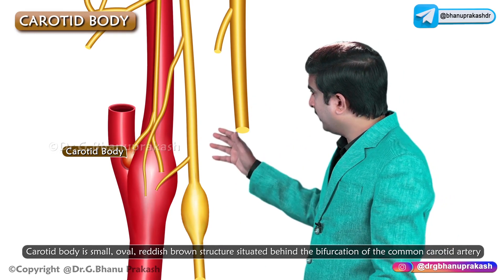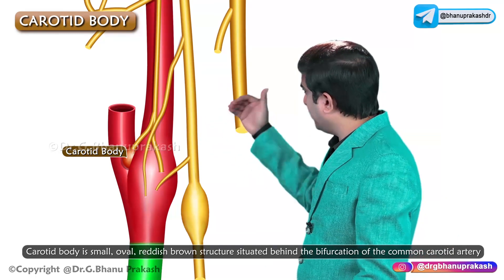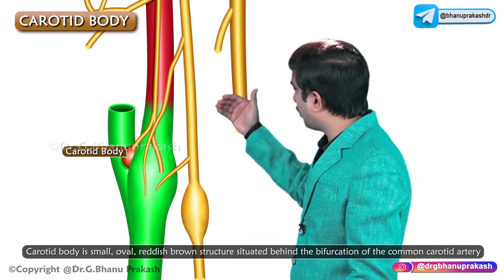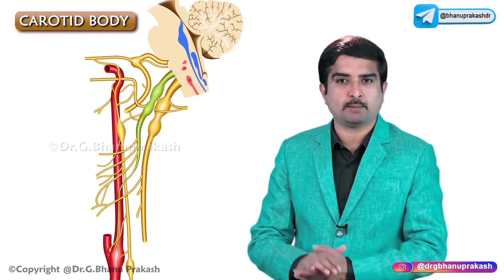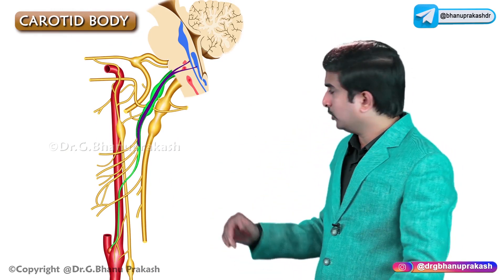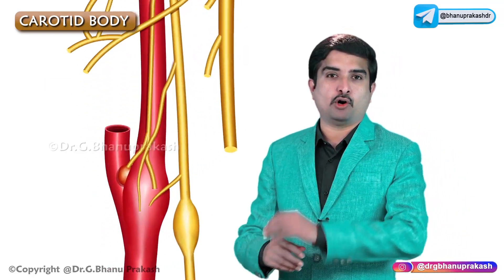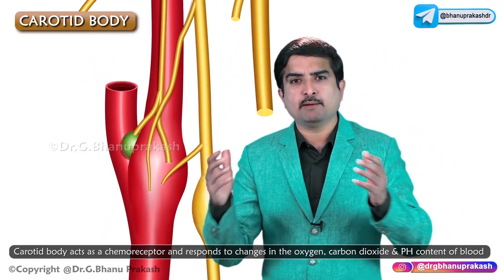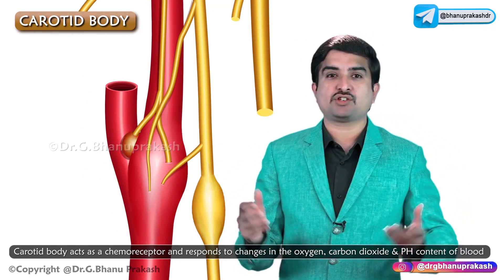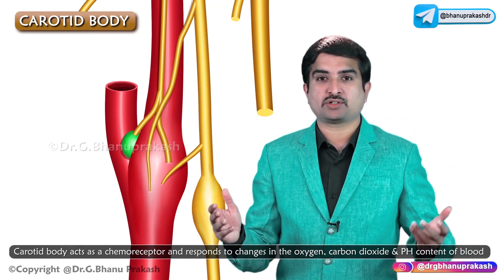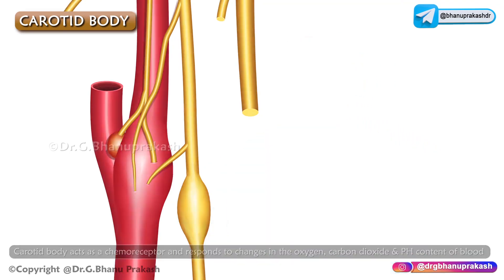The carotid body is a small oval reddish-brown anatomical structure situated behind the bifurcation of the common carotid artery. It receives a very rich nerve supply especially from the glossopharyngeal nerve, and this carotid body acts as a chemoreceptor and responds to changes in the concentration of oxygen, carbon dioxide, as well as pH content of the blood.